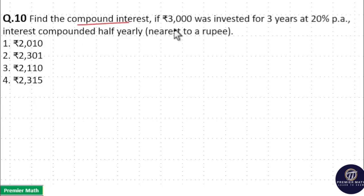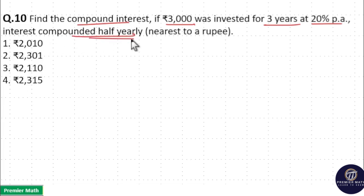Find the compound interest if Rs.3000 was invested for 3 years at 20% per annum, where interest is compounded half yearly.